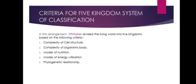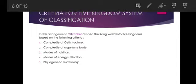What are the criteria for the five kingdom system of classification? Whittaker divided the living world into five kingdoms based on five criteria: (1) the complexity of cell structure, (2) the complexity of the organism's body, (3) modes of nutrition, (4) mode of energy utilization, and (5) the phylogenetic relationship among organisms.